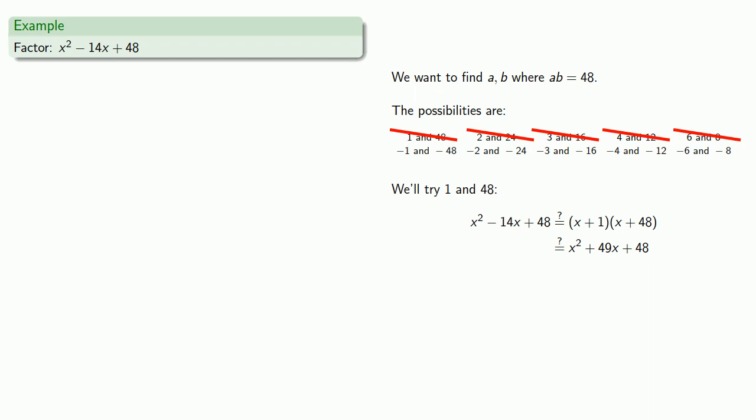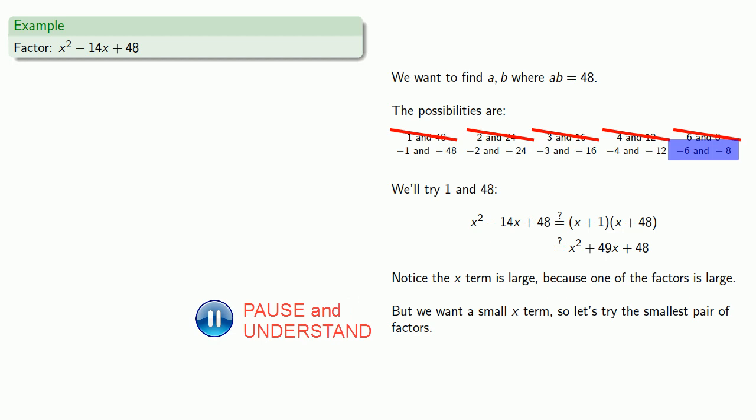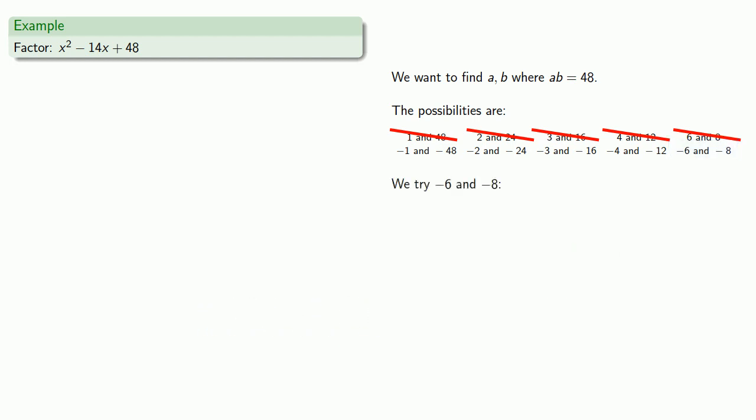The other thing you might notice is the x term itself, 49x, is large because one of the factors, 48, is also a large number. But we don't want so large of an x term. We want a relatively small x term. So let's try the smallest pair of factors, negative 6 and negative 8. We try negative 6 and negative 8, and we find we get a factorization.